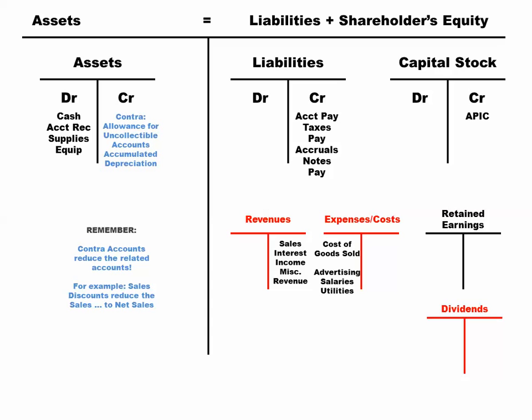Over with your assets, we've got two contra accounts: allowance for uncollectible accounts is a contra to accounts receivable, and accumulated depreciation is the contra account to equipment. In your revenues, we've got sales discounts and sales returns and allowances. Remember that to get to net sales, we need to start with our sales on the credit side and subtract out the sales discounts and sales returns and allowances to get to net sales — the true amount of sales.